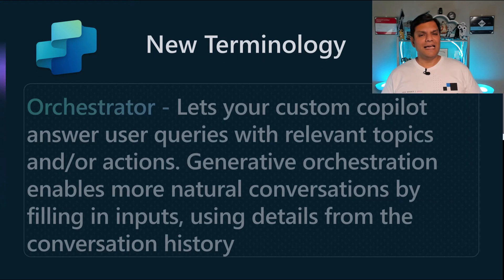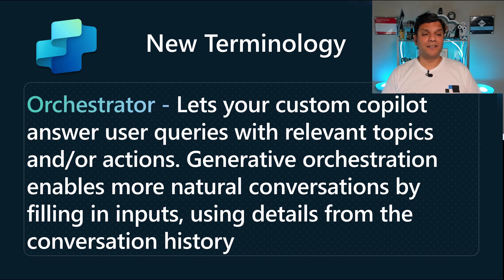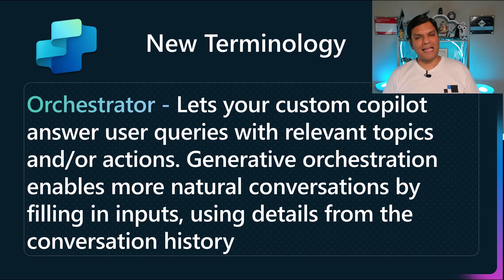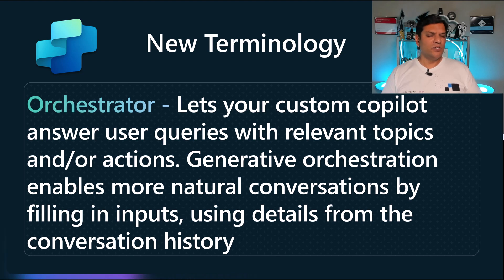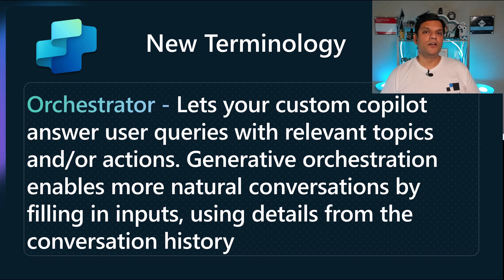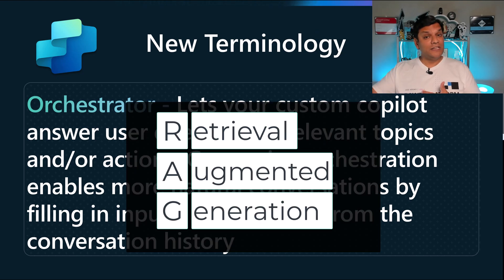Let's focus on the new terminology. It's called the orchestrator. You might have even started to notice this terminology in some articles that came out in August — I've put those links in the description. The orchestrator is literally what lets your custom copilot answer user queries using the relevant questions, topics, and answers. This is basically the generative AI, now called generative orchestration, that enables more natural conversations by filling in inputs using details from the conversation history. In the backend, it still uses the RAG model to get you that information. The concept is still the same, but this is the new terminology: orchestrator.